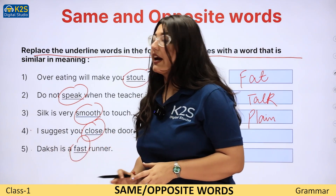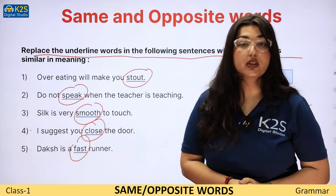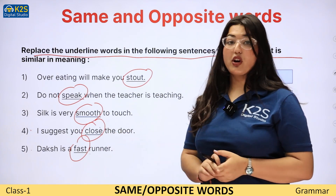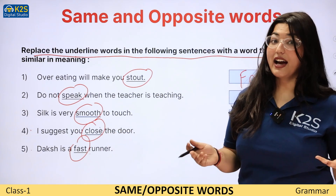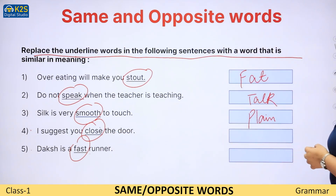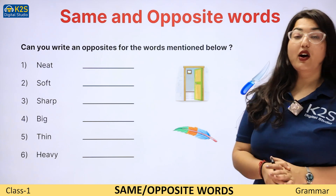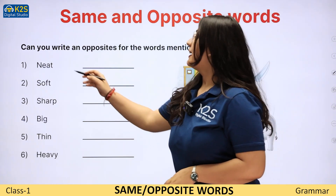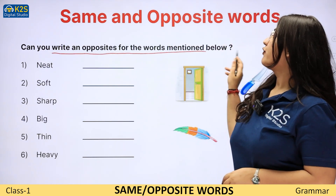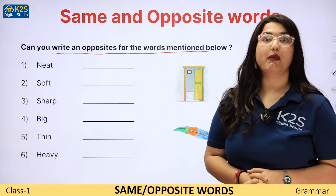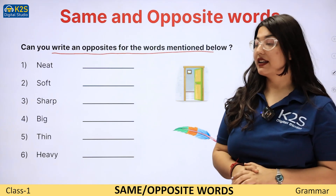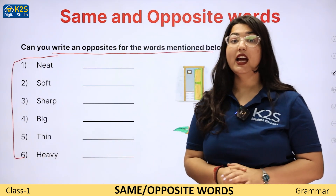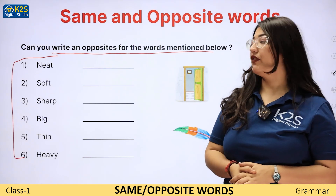So question number four and five — aap khud mujhe batana hoga. You have to decide ki in dono ka similar kya hoga. Now let's learn about this question: Can you write an opposite for the words mentioned below? Aapko yahan par kya karna hai? Jitne bhi words yahan par mentioned hain, you have to write the opposites.